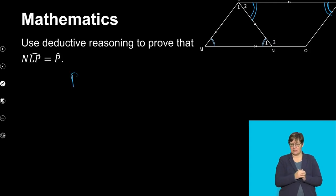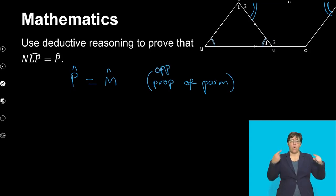So we know that P is equals to M and this will be properties of a parallelogram. And then actually I want us to maybe say opposite angles of a parallelogram. Because which property are you talking about? So let's rather use opposite angles of a parallelogram.